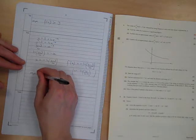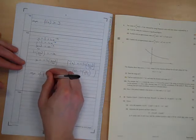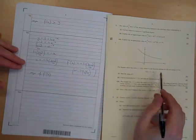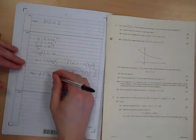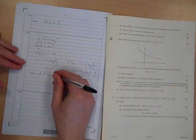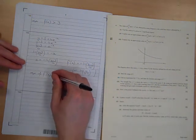The range of the inverse is the same as the domain of the original, which was stated as being all real values of x. So the inverse has a range of all real numbers.